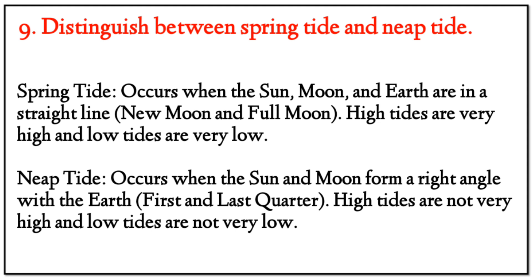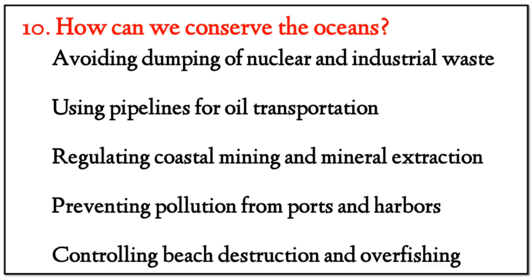Question 9: Distinguish between spring tide and neap tide. Answer: Spring tide occurs when the sun, moon, and earth are in a straight line — during new moon and full moon — when high tides are very high and low tides are very low. Neap tides occur when the sun and moon form a right angle with the earth — during the first and last quarter — when high tides are not very high and low tides are not very low.